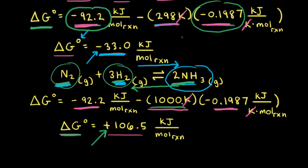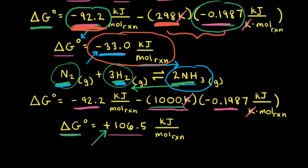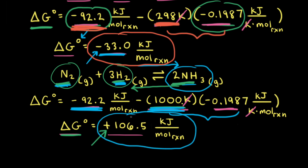Let's analyze why one calculation gives a negative ΔG⁰ and the other gives a positive value. For the calculation at 298 Kelvin, the temperature was low enough that the entropy term didn't overwhelm the negative value for the enthalpy term, and we ended up with a negative overall ΔG⁰. However, for the calculation at 1000 Kelvin, the temperature was high enough that the entropy term outweighed the negative enthalpy term, making the overall ΔG⁰ positive.